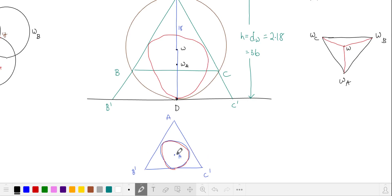So the distance from a to omega a is twice the distance from omega a to the opposite side at point d. And since the distance from a to d is 36, we have the distance from omega a to d is 12. And this is the radius of our three interior circles.